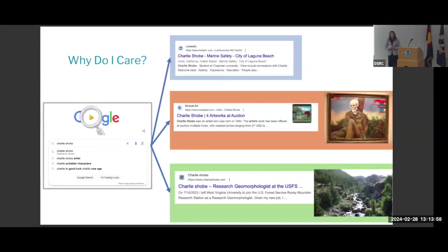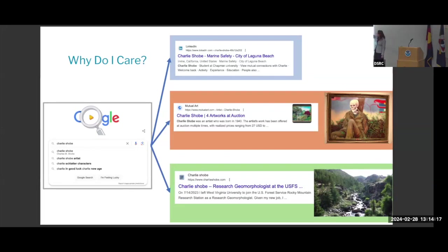Here's a humorous example: I have an extremely uncommon name — there's only one Christina Braunbelder in the world, so I'm not a good example. However, my partner's name is Charlie Sho. When you search Charlie Sho, you get a marine safety expert in Laguna Beach, a Vietnam War vet who turned that experience into evocative paintings, and then finally Charlie, the research geomorphologist. This is why maintaining your digital presence might matter a lot to you — especially if you're a John Smith or a Charlie Sho.